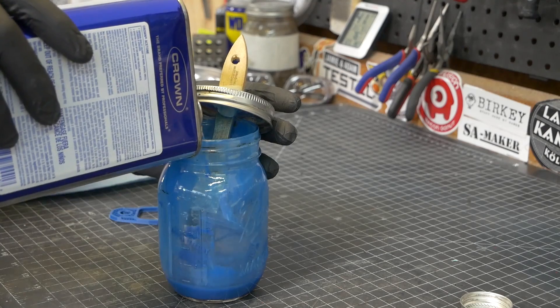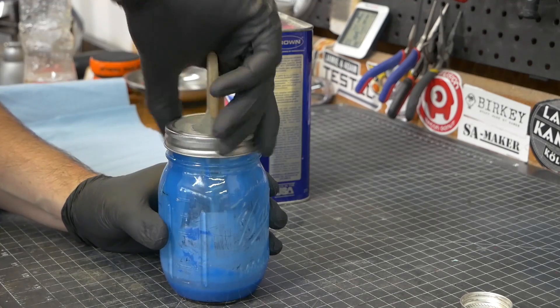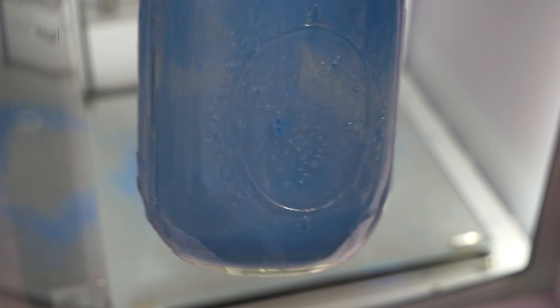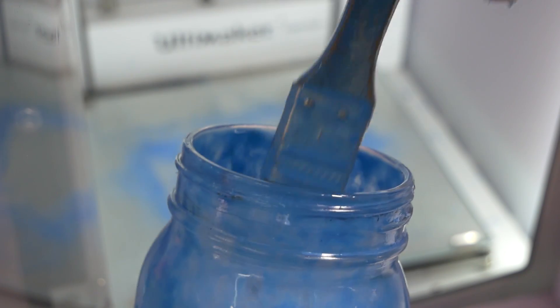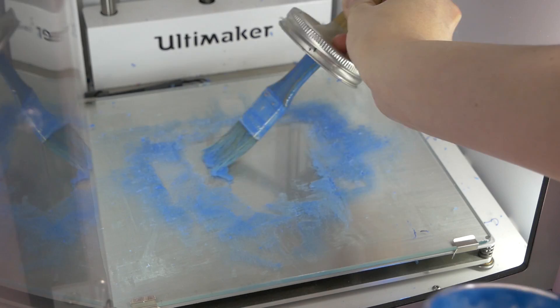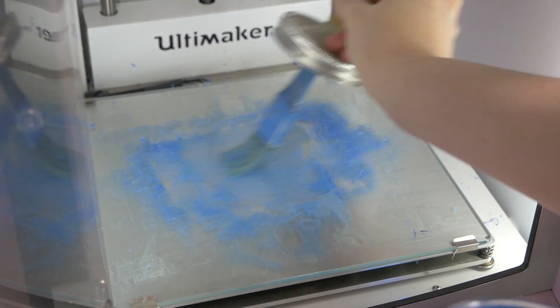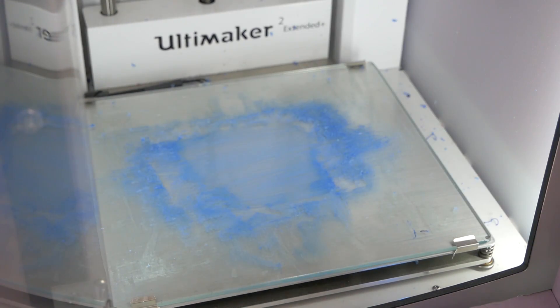To make sure the ABS would stick down, a slurry of acetone and ABS printed supports were mixed together. This container design is great for other materials as well. We'll link to Evil Ted's video on creating one of these in the description. The mixture is brushed onto the bed of the Ultimaker and just left there.